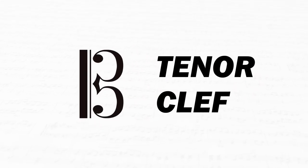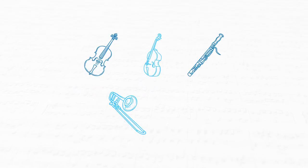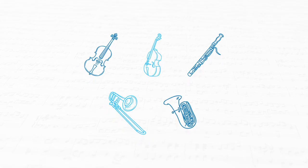This particular clef is called the tenor clef, and tenor clef is used for the lower-sounding instruments when they're playing in their higher register. Those instruments being the cello, double bass, bassoon, tenor trombone, and baritone or euphonium.